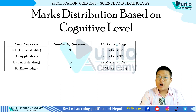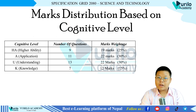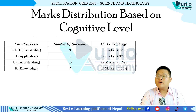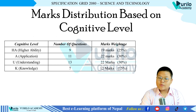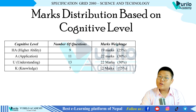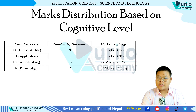Now for the final marks distribution based on cognitive level: Higher Ability has 9 questions worth 18 marks (25%), Application has 11 questions worth 22 marks, Understanding has 13 questions worth 22 marks (30%), and Knowledge has 7 questions worth 12 marks (15%). This completes the full marks distribution breakdown showing how many questions and marks fall under each cognitive level.